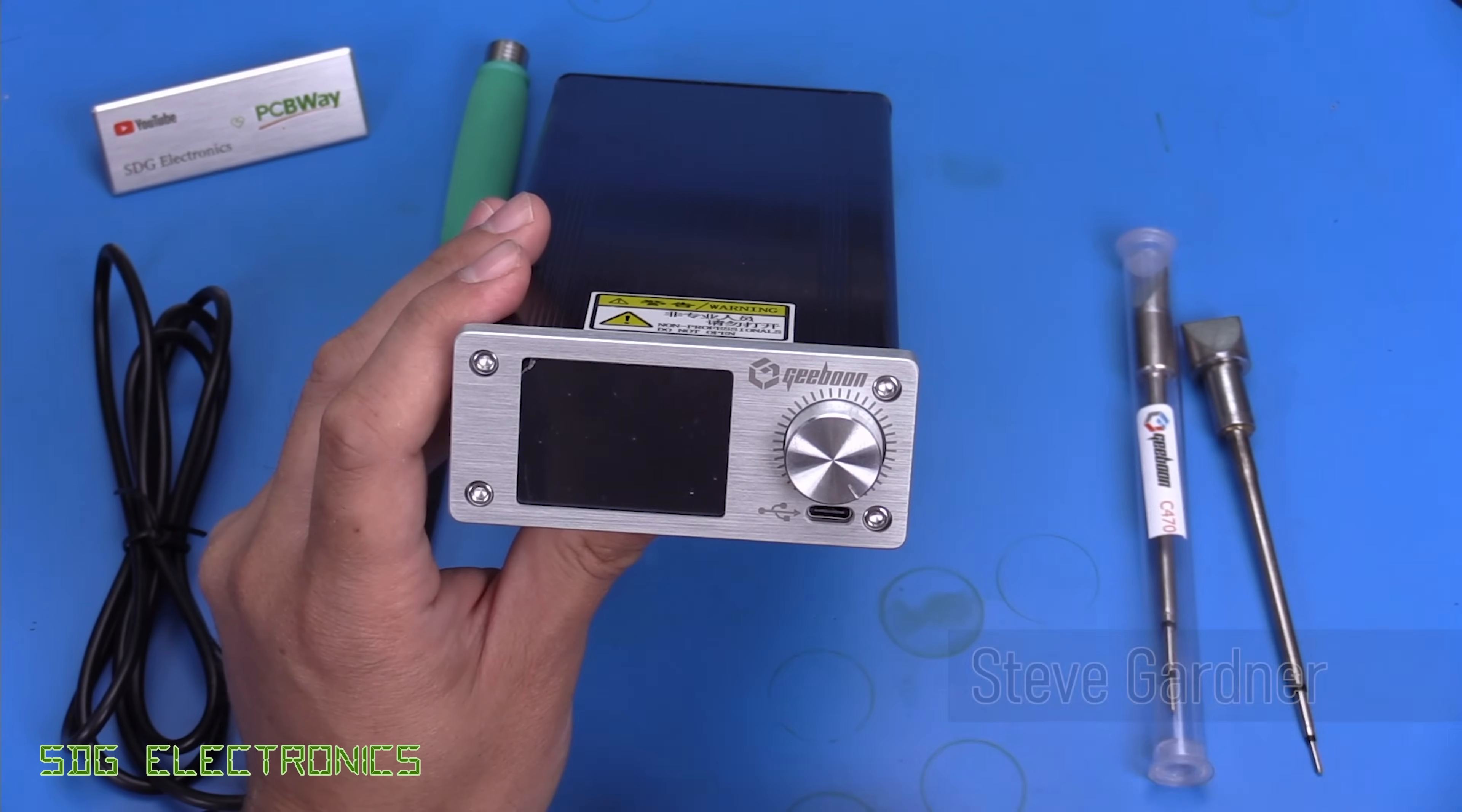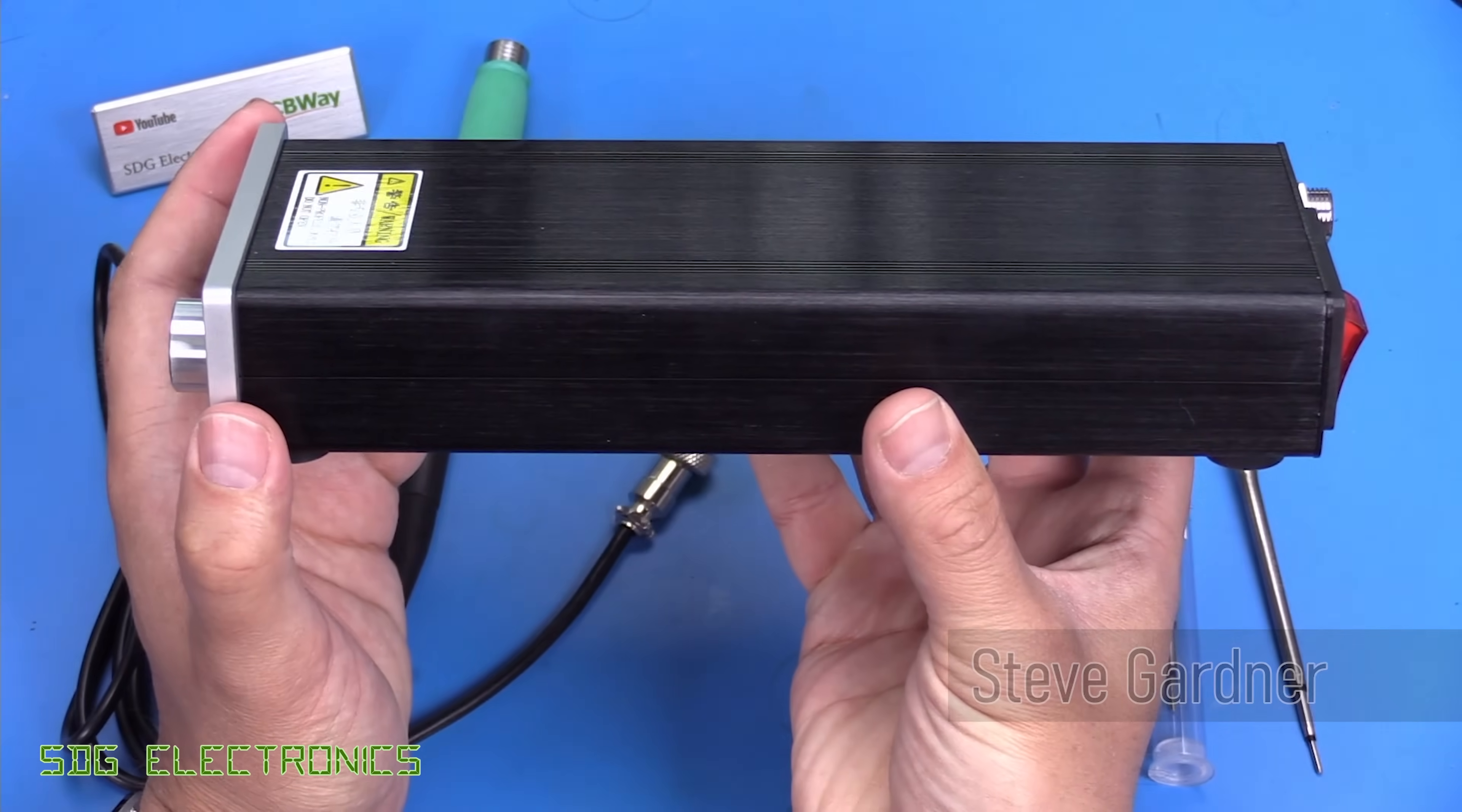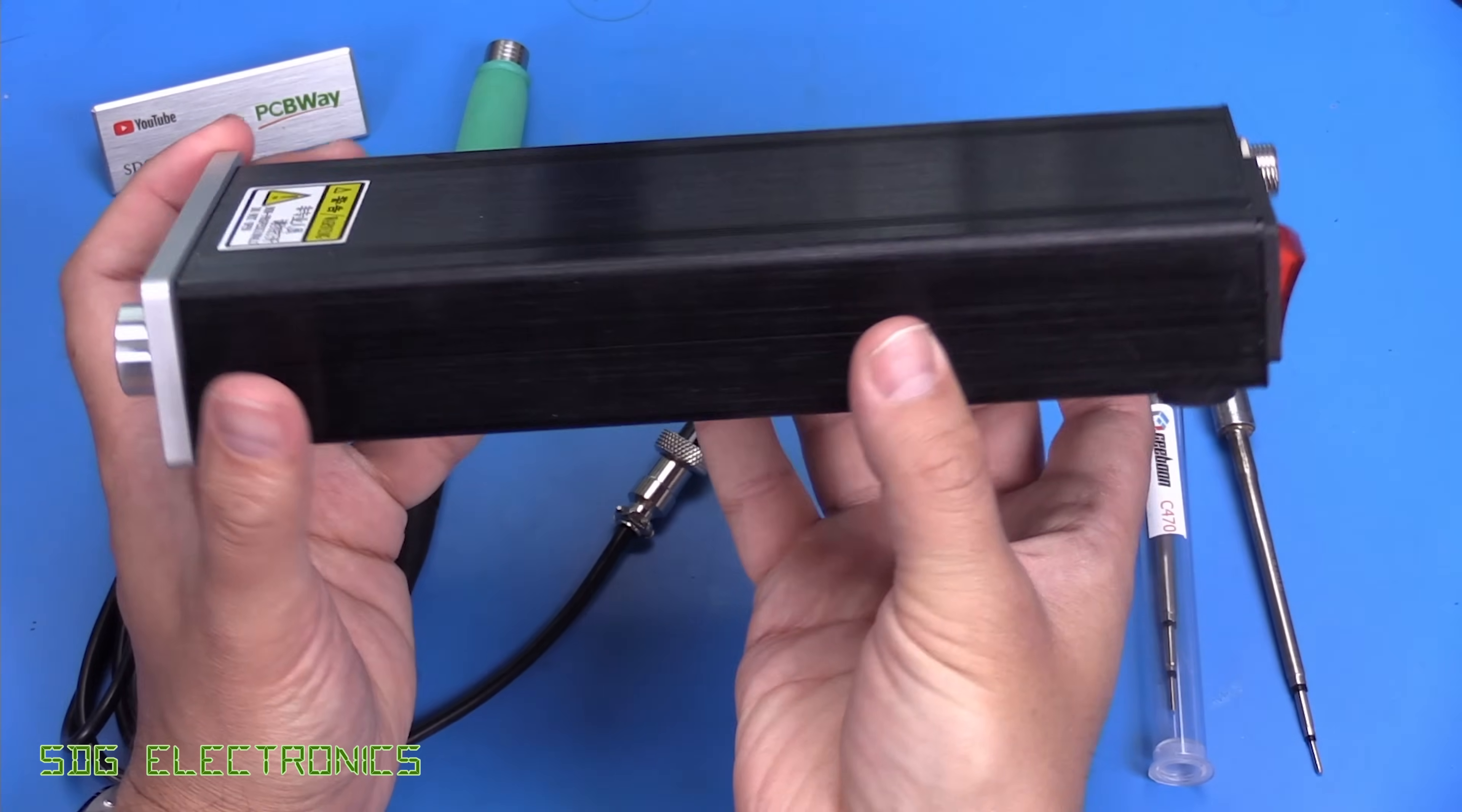Hi, today we're going to be looking at the Jibun TC20B soldering station, and this is a very high power system. You can see just by the size of this thing that it must have a very large power supply in it.